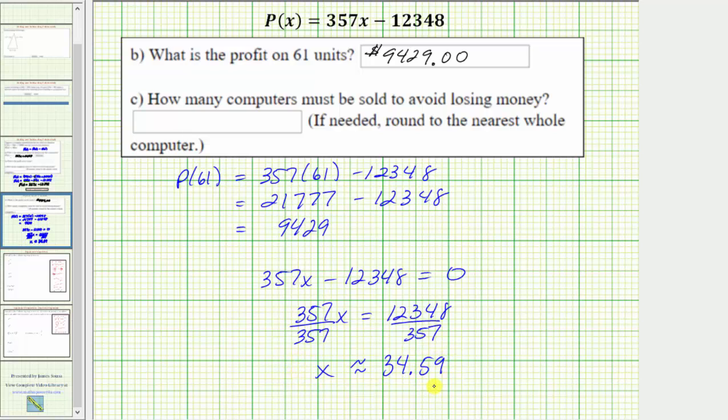So this is approximately how many computers must be sold to breakeven. But of course the company cannot sell a fraction or decimal part of a computer. So if they sell 34 computers, they would lose money. If they sell 35 computers, they would start to make money. And therefore the company must sell 35 computers in order to avoid losing money.